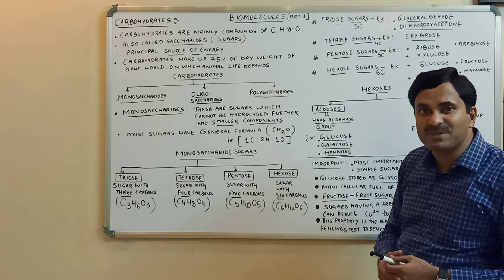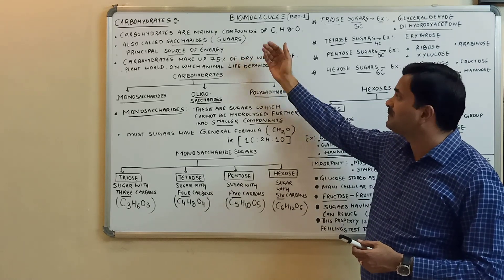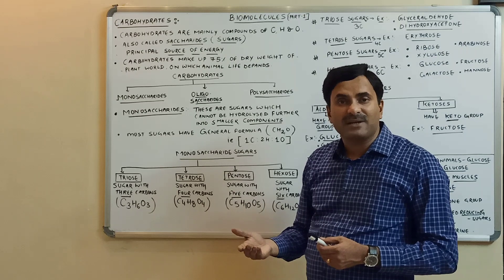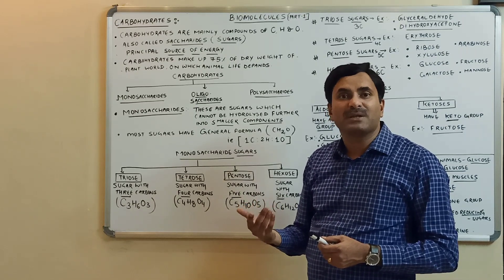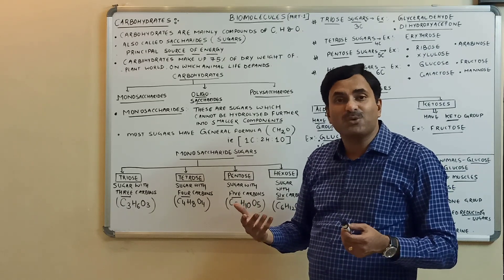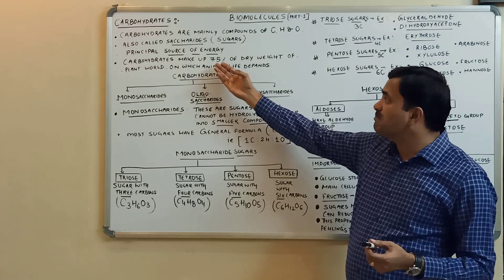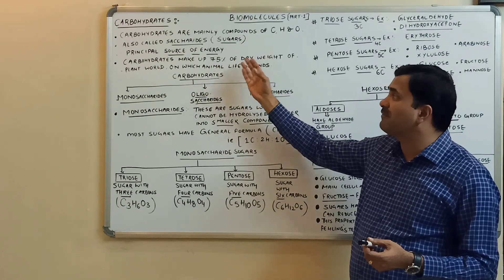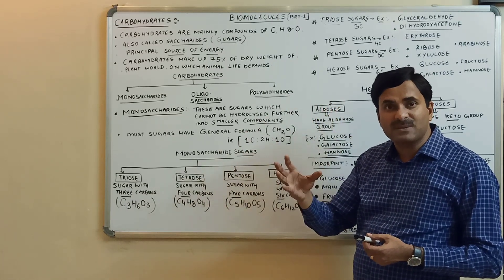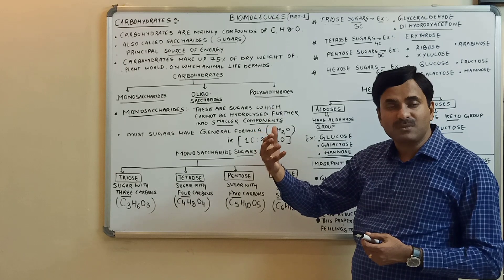The term 'saccharide' means sugars, so we are studying sugars. Carbohydrates are the principal source of energy — in fact, they are the instant source of energy. Whenever we need instant energy, glucose is provided. Carbohydrates make up 75 percent of the dry weight of the plant world.